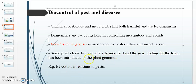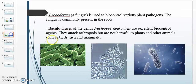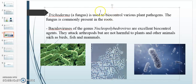Some plants have been genetically modified — for example, the cotton plant — and the gene coding for the Bt toxin has been introduced into the plant genome. Another important biocontrol agent is the fungus Trichoderma, which is commonly present in the root zone and is used to control various plant pathogens.